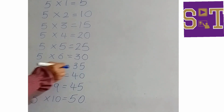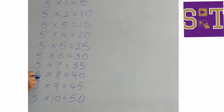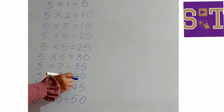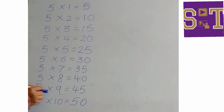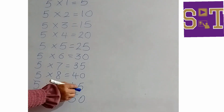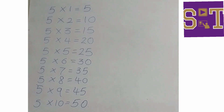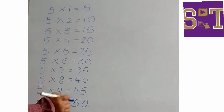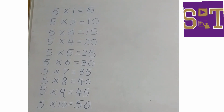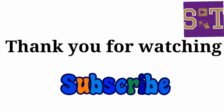Five sevens are thirty-five. Five eights are forty. Five nines are forty-five. Five tens are fifty. Thank you for watching — subscribe for more videos!